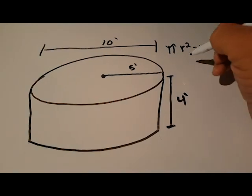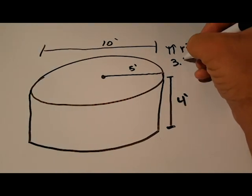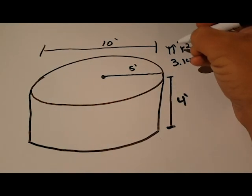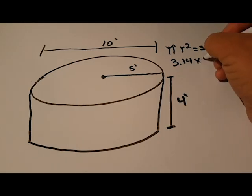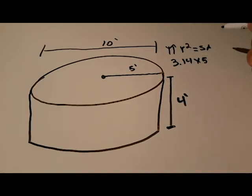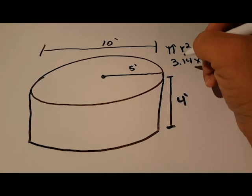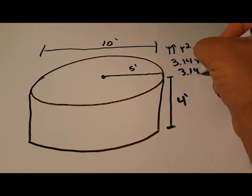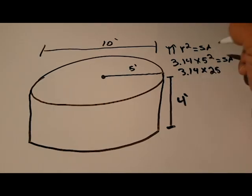What we're going to do is put in 3.14 for π, and we're going to multiply that by 5, which is our radius, and that's going to be squared. That will equal our surface area. Then from there we'll do 3.14 times 25, because that's 5 squared.